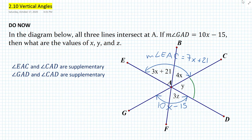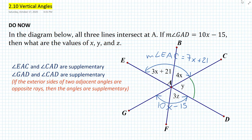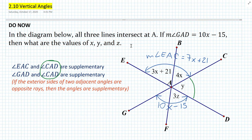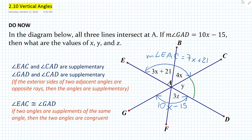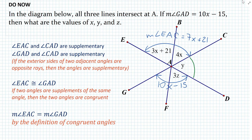So let's write this down. We know that angle EAC and angle CAD are supplementary. We also know that angle GAD and CAD are supplementary. Why are they supplementary? As you remember from one of the previous videos, if the exterior sides of two adjacent angles are opposite rays, then the angles are supplementary. Now, when you have two angles that are supplementary to the same exact angle, well, angle EAC and angle GAD must be congruent. So angle EAC is congruent to angle GAD because if two angles are supplements of the same angle, then the two angles are congruent. The fact that the angles are congruent also means that they're equal in measure, and we know that's true by the definition of congruent angles.